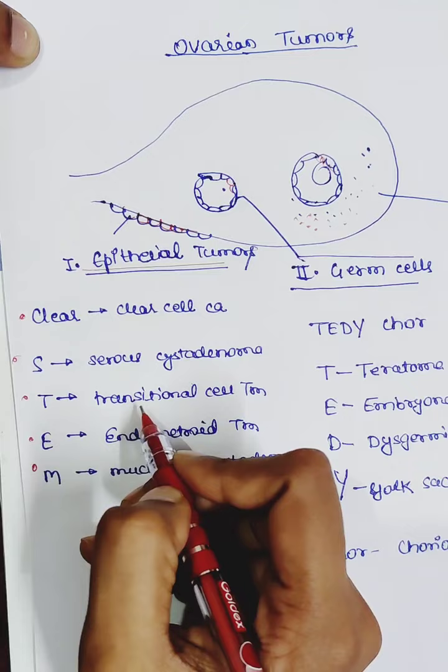T for transitional cell tumor. E for endometroid tumor. And M for mucinous cystadenoma.